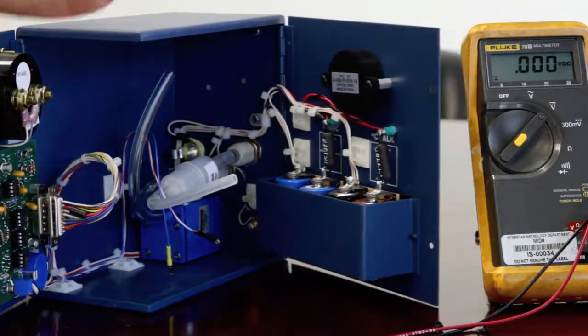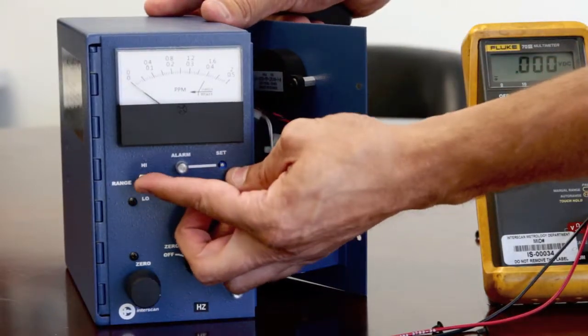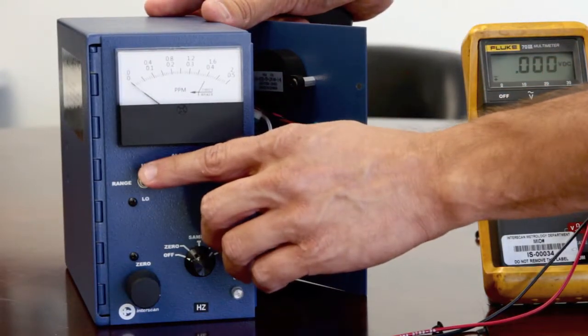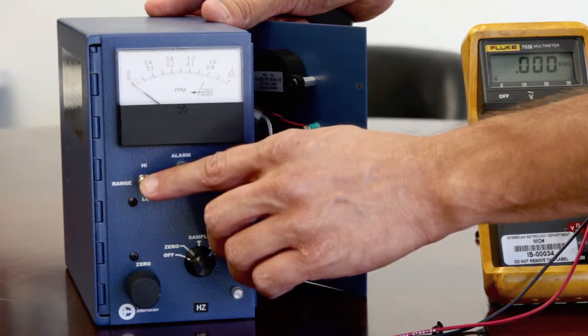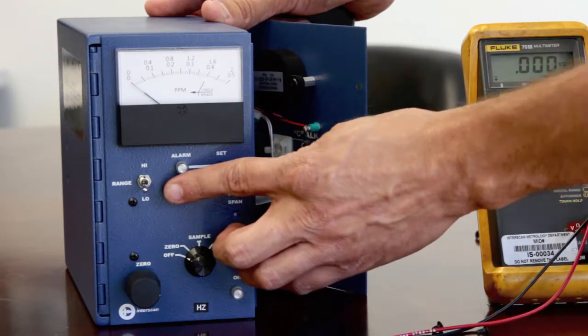If your instrument has a multi-range switch, go to the front of the instrument and change the range selection switch to low range.